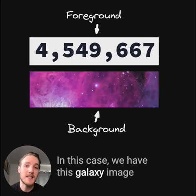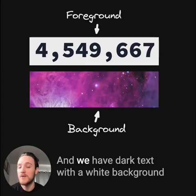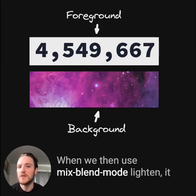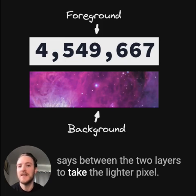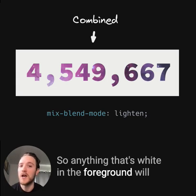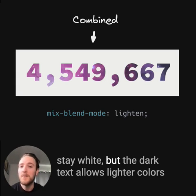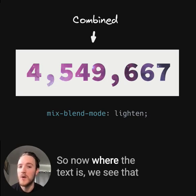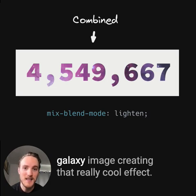In this case, we have this Galaxy image in the background, and we have dark text with a white background in front of it, positioned absolutely on top. When we then use Mix Blend Mode Lighten, it says between the two layers to take the lighter pixel, so anything that's white in the foreground will stay white, but the dark text allows lighter colors from the background to bleed through. So now, where the text is, we see that Galaxy image creating that really cool effect.